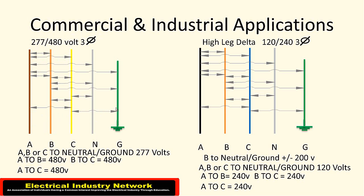And then each one of the phases to ground, you'll get 277 volt. So between the phases is 480, phase to neutral, phase to ground is 277.